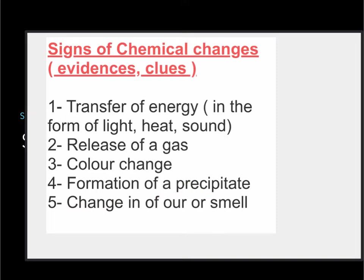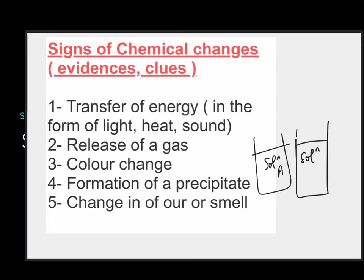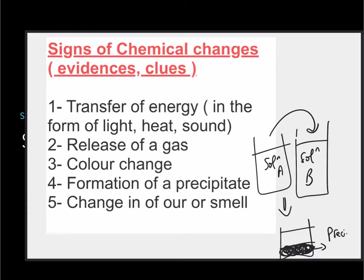Number four is the formation of a precipitate. Sometimes when you mix two solutions together — solution A and solution B — you are going to get a solid substance that forms at the bottom of the mixture, and this solid substance we call a precipitate. Number five is a change in odor or smell.